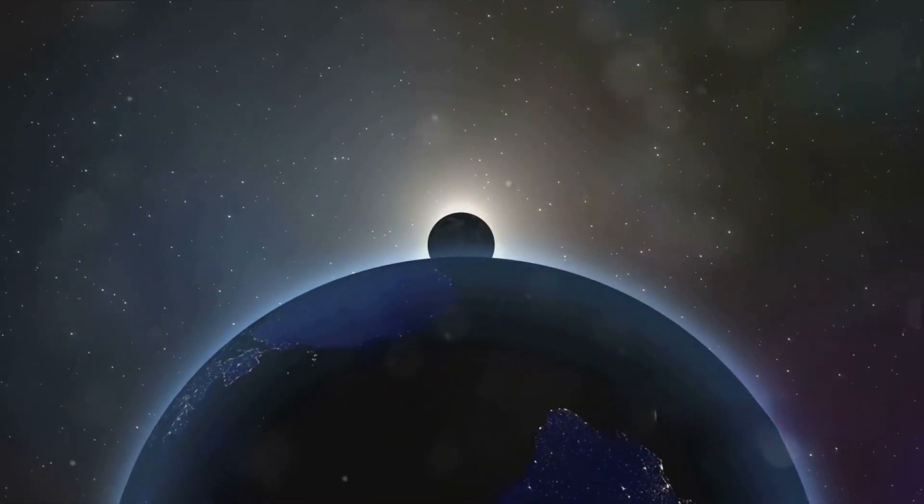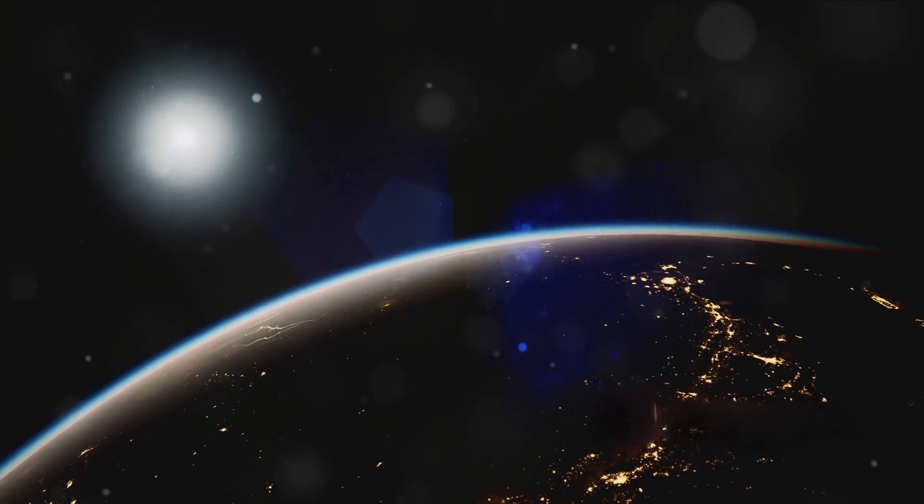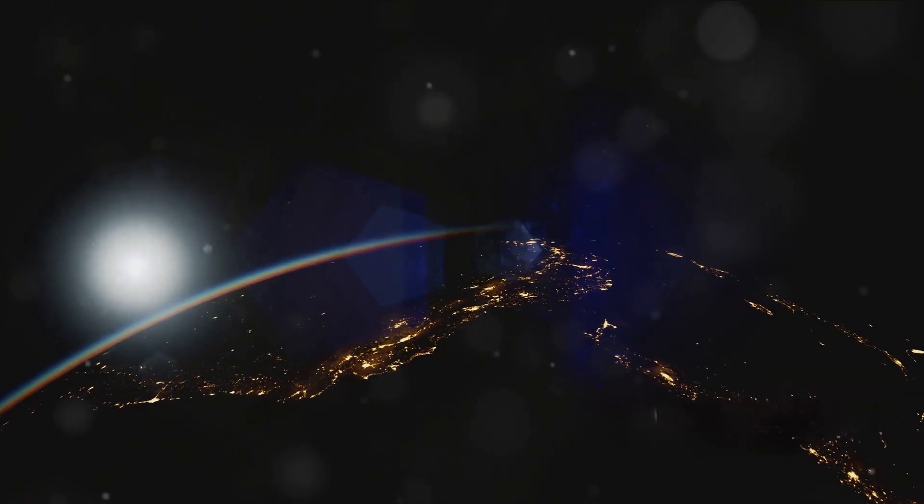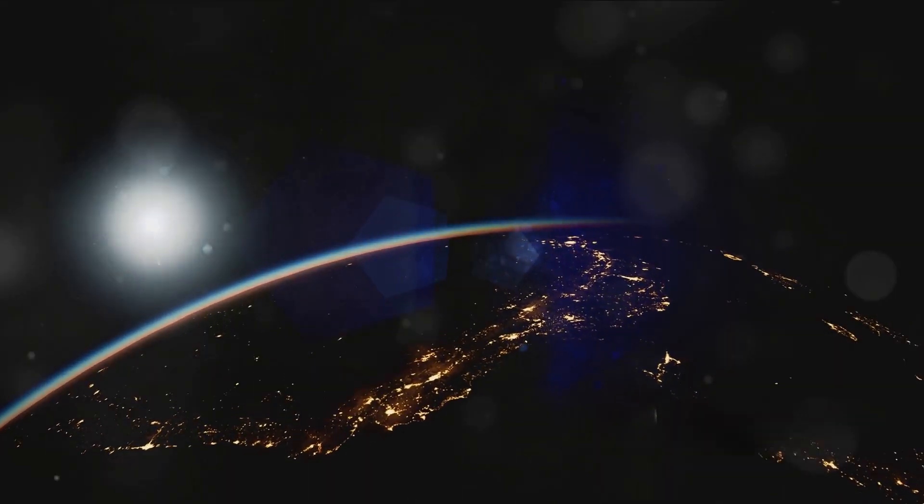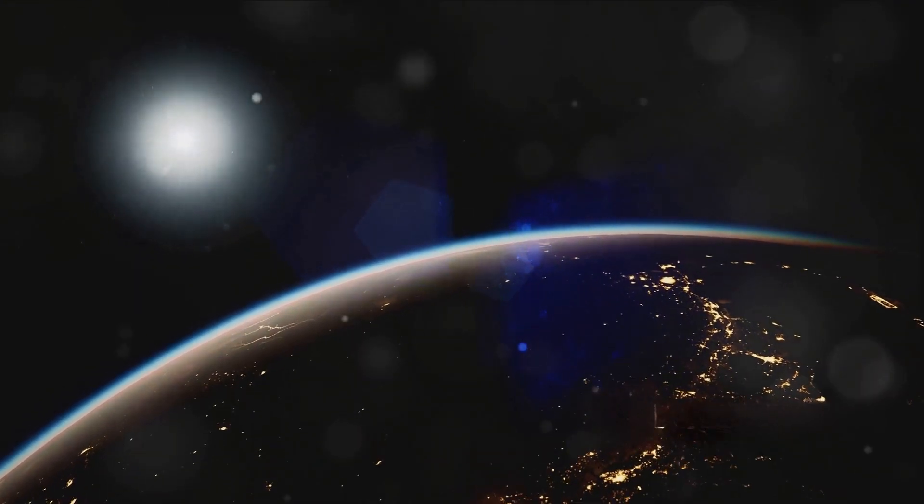Now, what about our Sun and Moon? Imagine for a moment our Earth is flat. This brings up an array of puzzling questions and peculiarities about our Sun and Moon. If the Earth were flat, these celestial bodies would have to hover above us in a constant loop, never dipping below the horizon. But wait, there's more.